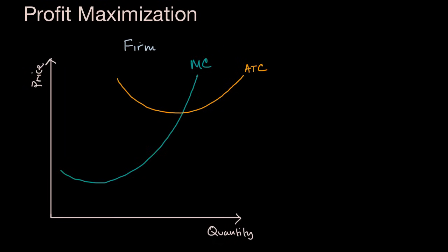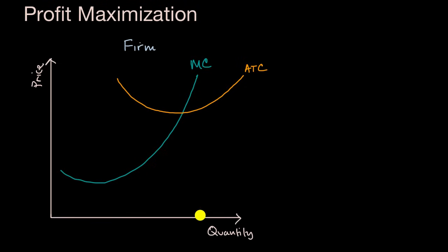We've spent several videos talking about the costs of a firm — in particular, how marginal cost is driven by quantity, how average total cost is driven by quantity, and how we think about other average costs as well. Now in this video, we're going to extend that analysis by starting to think about profit.